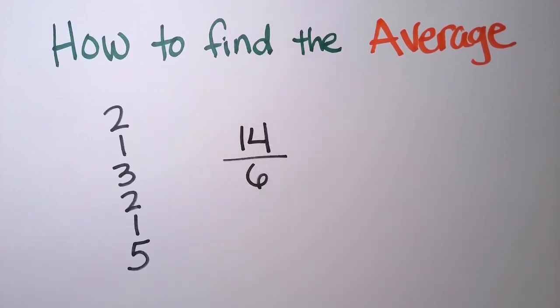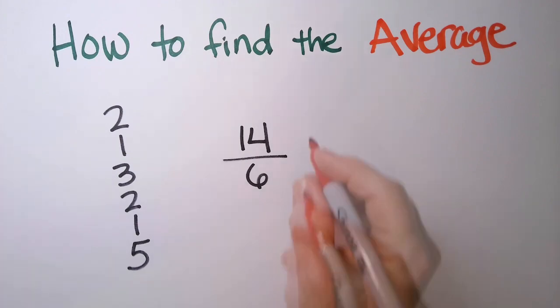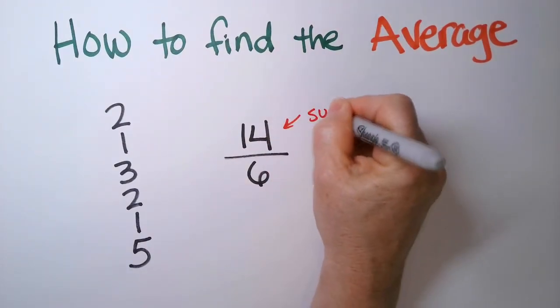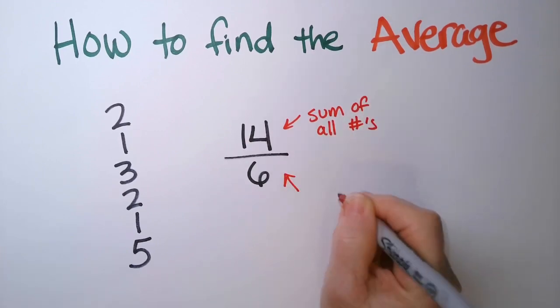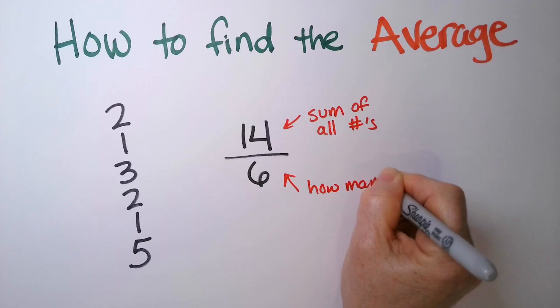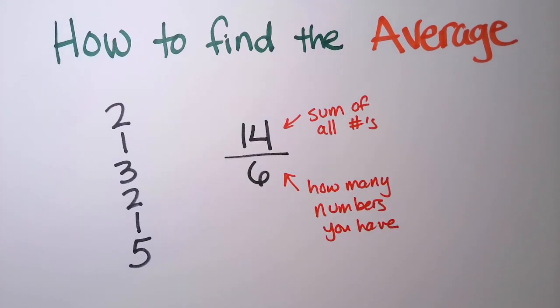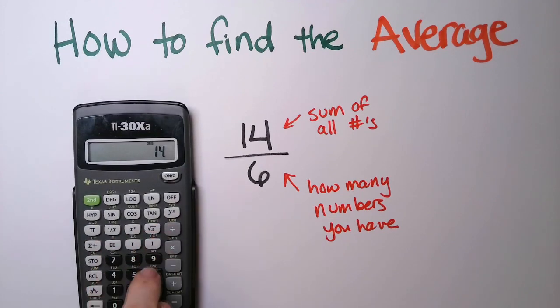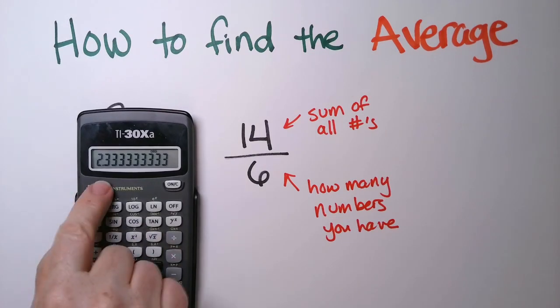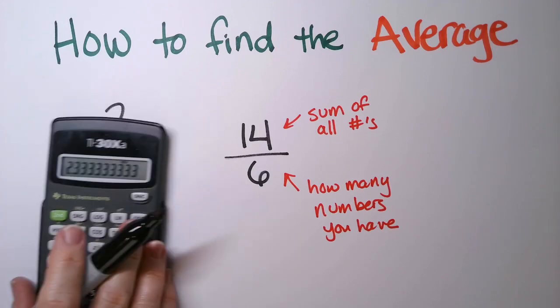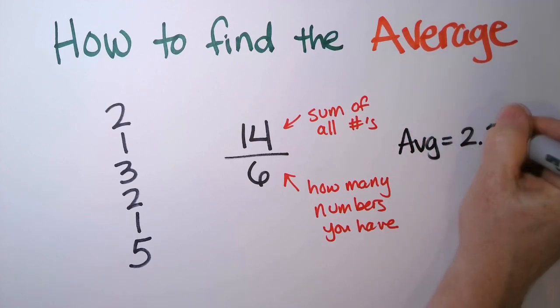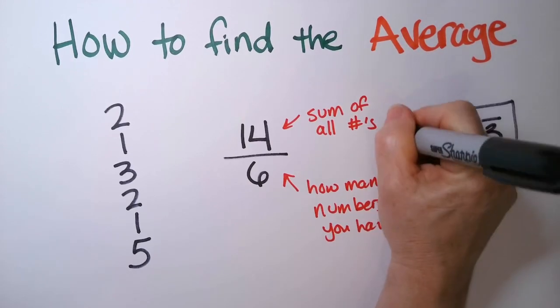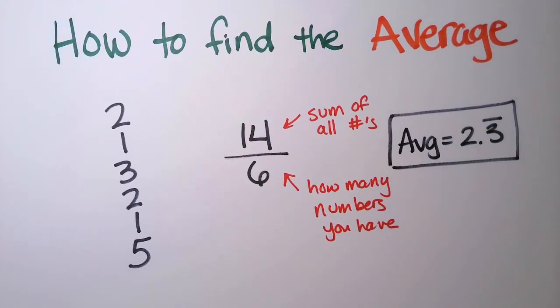So I have 14 divided by 6. So on top goes the sum of all numbers. And on the bottom is how many numbers you have. So we're going to use our calculator. We'll just say 14 divided by 6. My average is 2.33333 and on. So I'm just going to say my average is 2.3 bar. That just means the 3 repeats over and over.